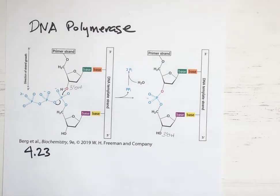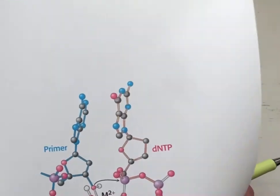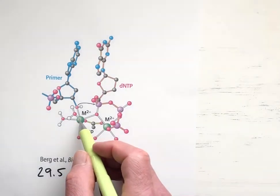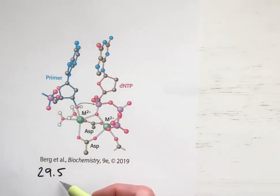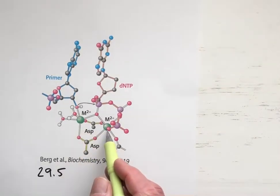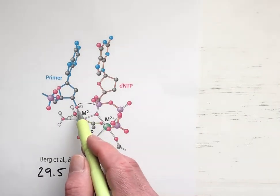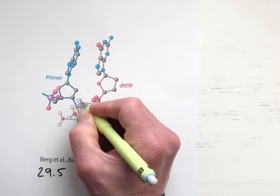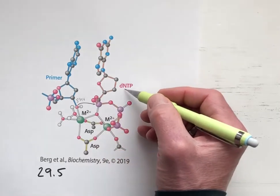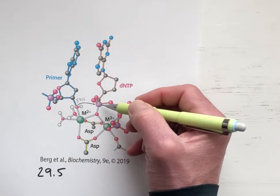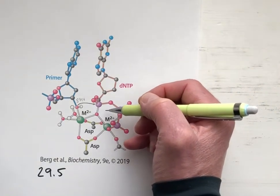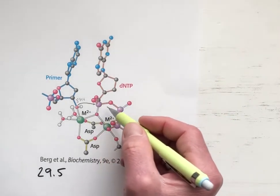All of this is depicted with more atomic detail based on the crystal structure of the enzyme in the active site. From chapter 29, figure 29.5, there are two magnesium ions stabilizing the transition state. As the 3' hydroxyl attacks the alpha phosphorus of the deoxynucleotide triphosphate, there is a large accumulation of negative charge on the transition state.